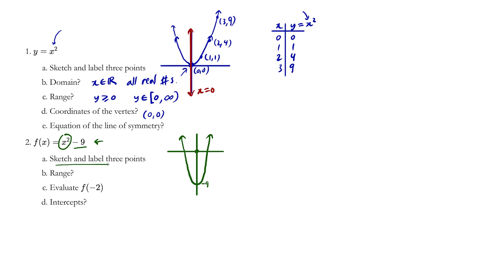Sketch and label 3 points. So this point over here would be 0, negative 9.